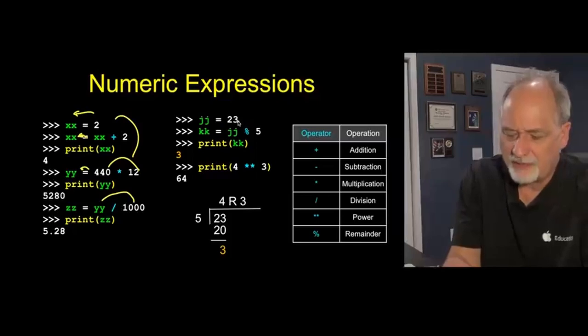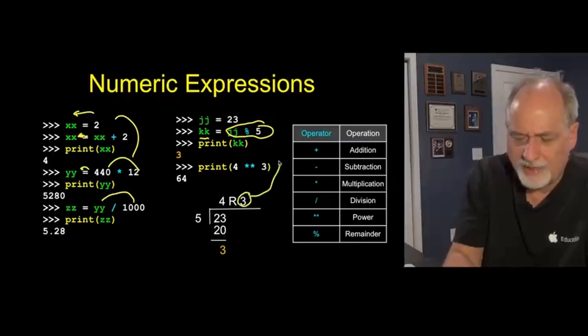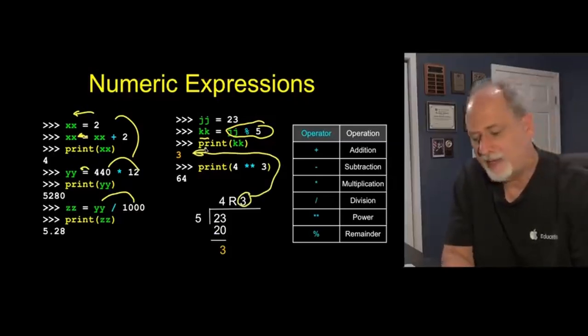That says take 23, divide it by 5, and give me back the remainder, and put it in kk. So this expression evaluates like this: Take 23, divide 5 into 23, 4 remainder 3. The 3 is what comes back. That is the remainder, also called modulo operator.